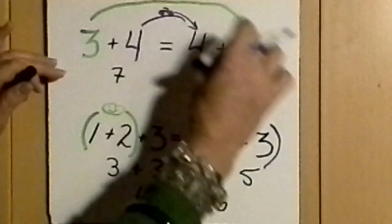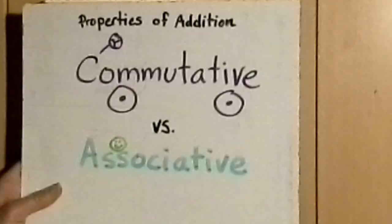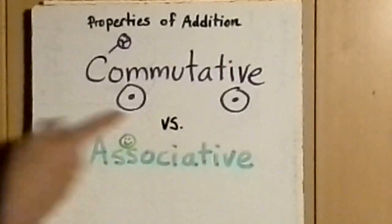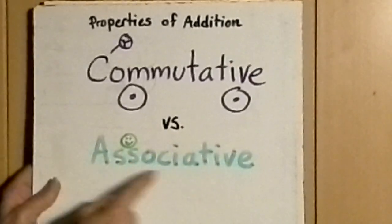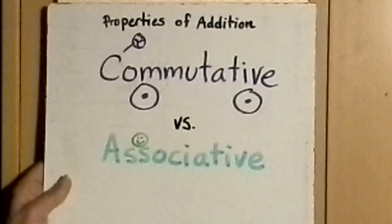This is the commutative property because the values commute. Thank you very much for today's lesson on properties of addition, commutative versus associative. And now I imagine the decorations make a little bit more sense. Thank you.